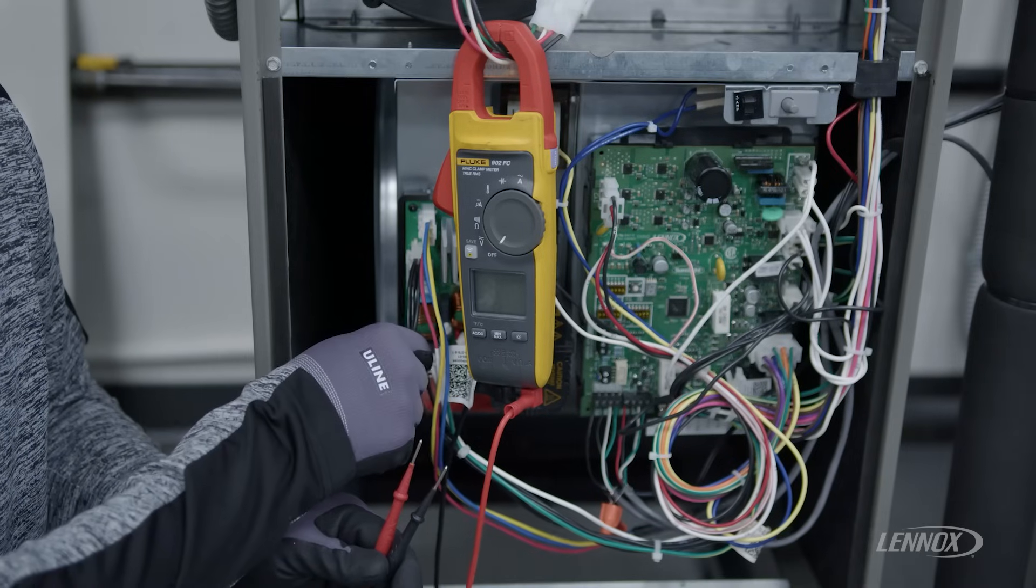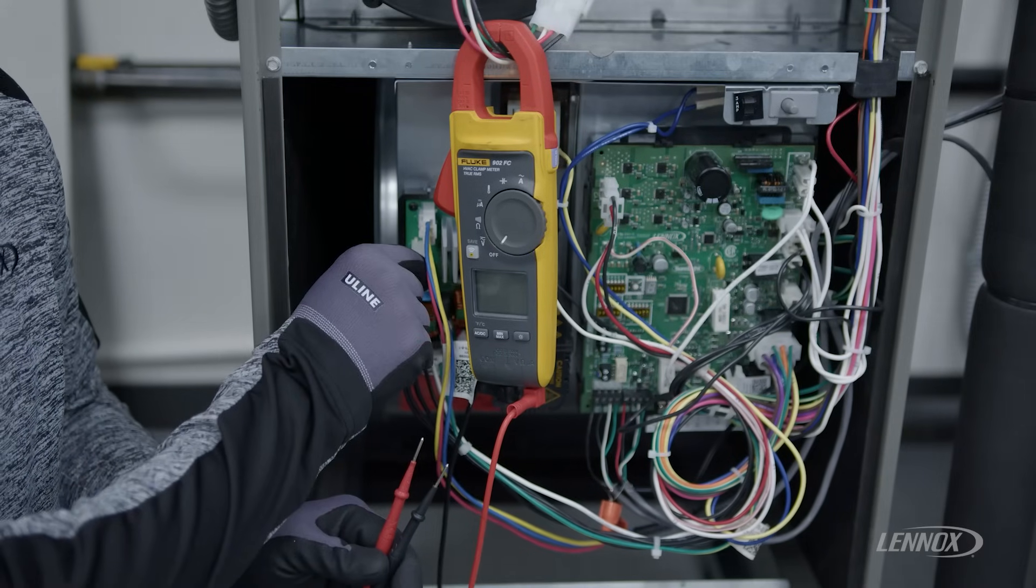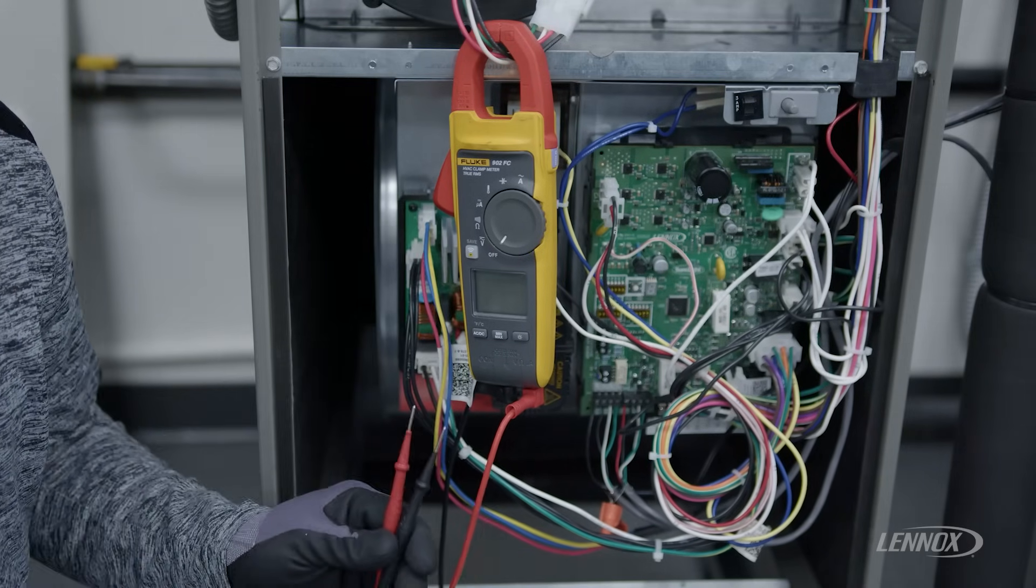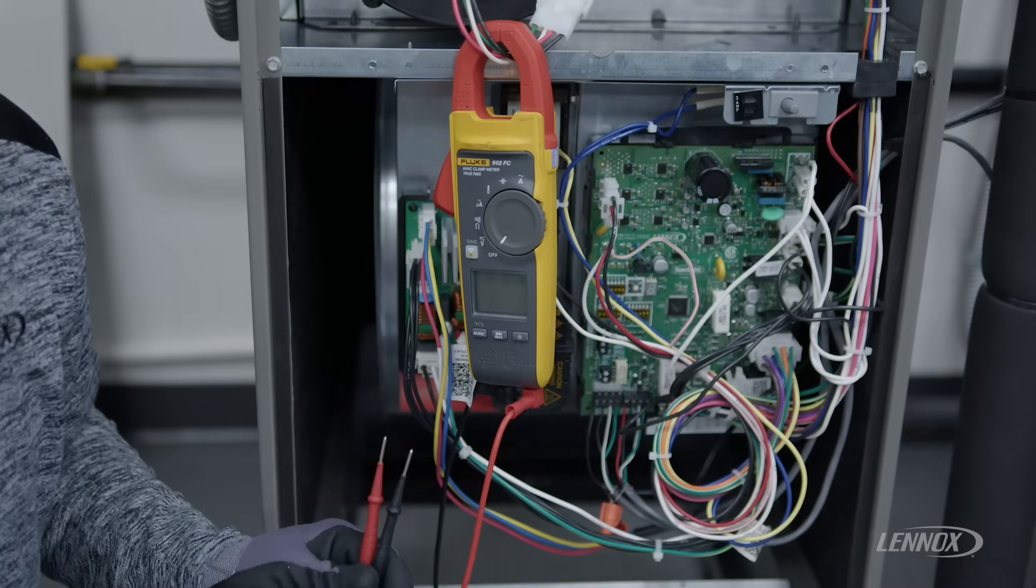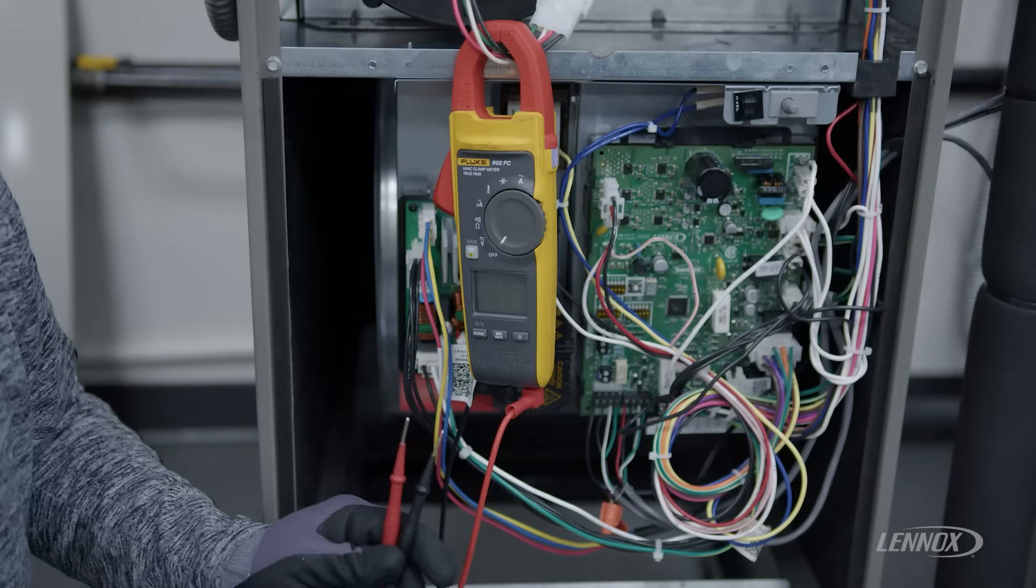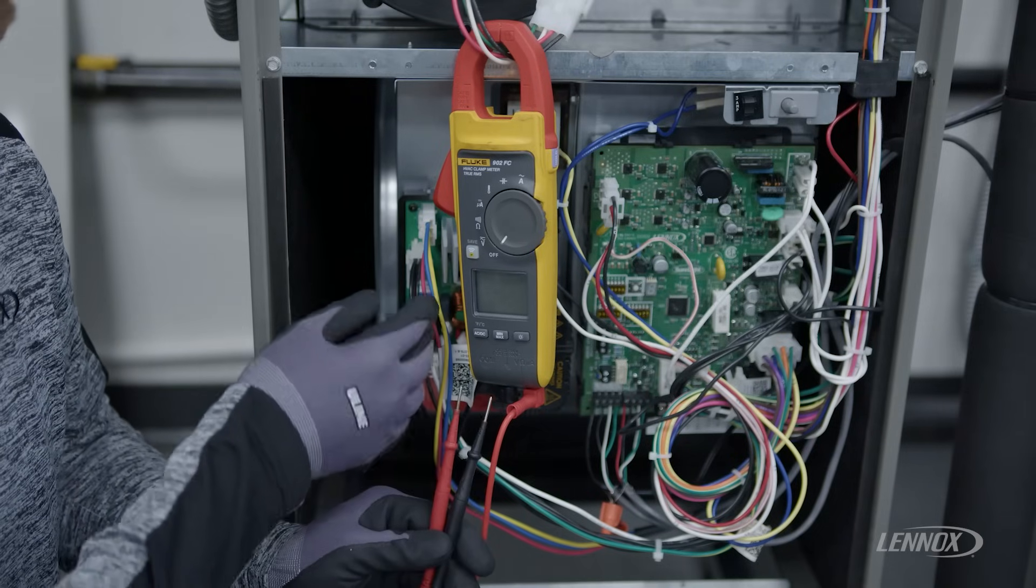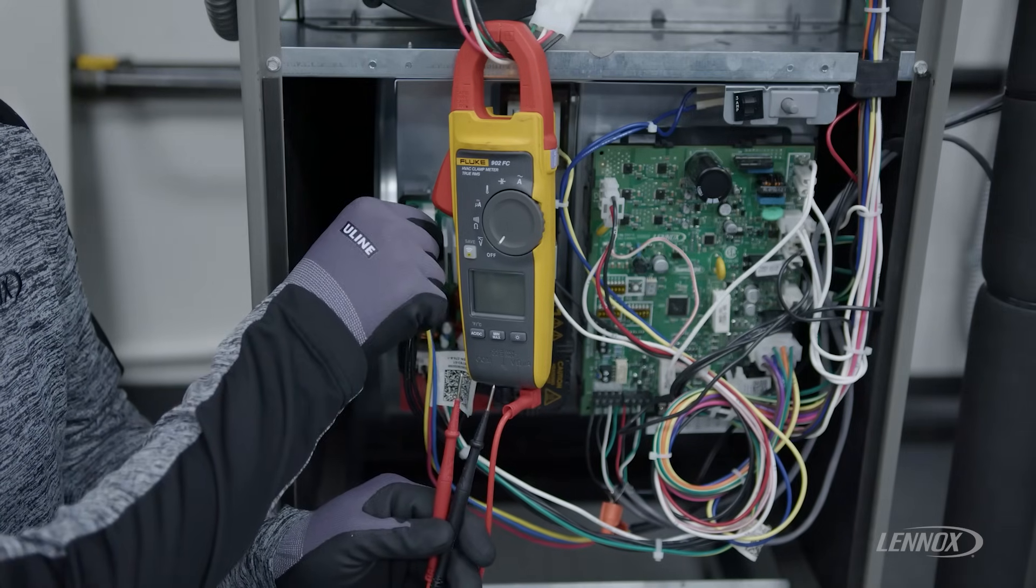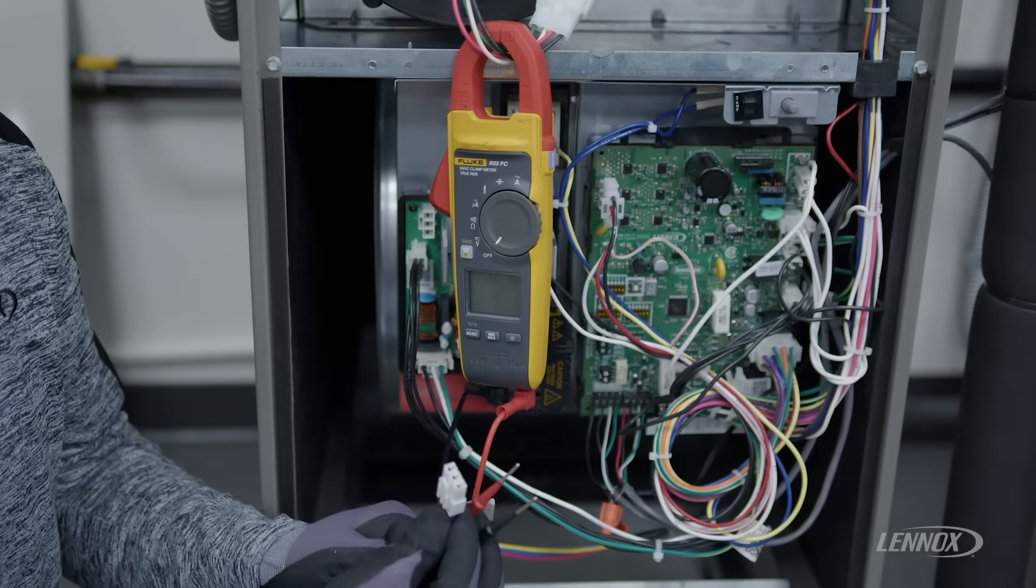Once we've confirmed the integrity of the communication wire, ensuring that it's plugged in and tightly secured and there's no evidence of corrosion, we could then move on to a motor check. To do this, simply come to our motor drive board, remove your 3-pin harness that connects to the motor.